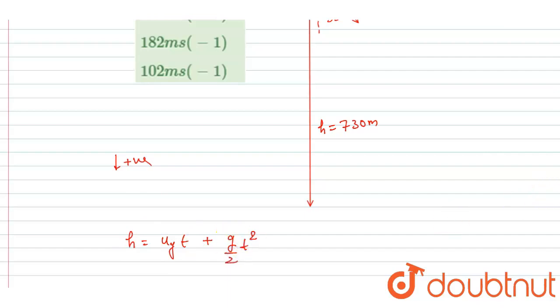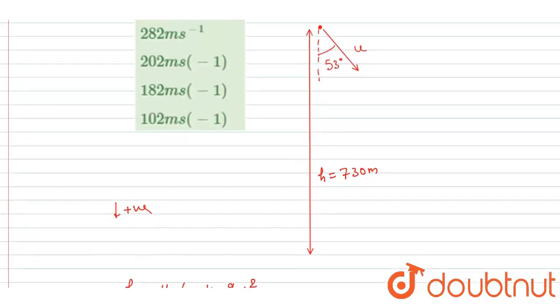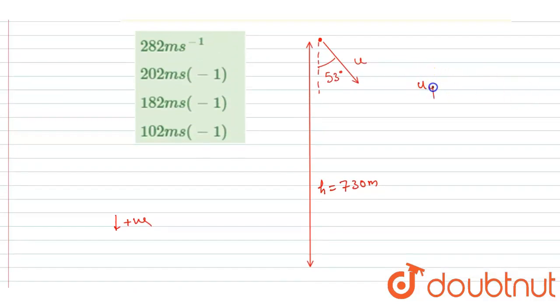The height traveled in downward direction is 730, and if I talk about u_y, you can see it is u cos 53 degrees. So I will write this is cos 53, and it is 3 by 5.